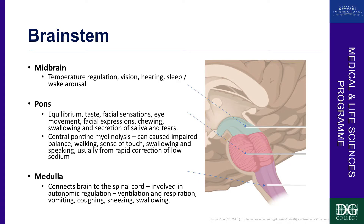The midbrain is involved in temperature regulation, vision, hearing, and sleep-wake cycles, because a lot of the system just around the midbrain is called the limbic system, which is involved in consciousness and in making you awake and asleep.